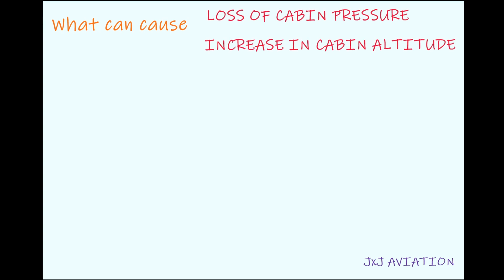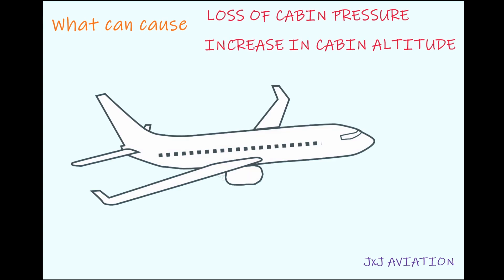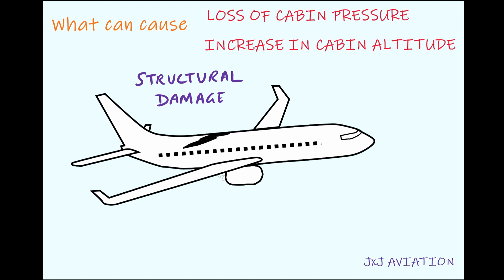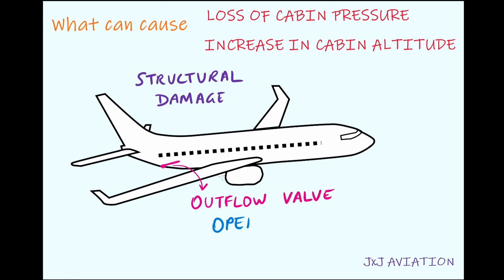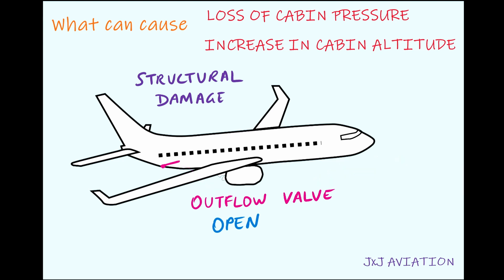Now let's see what can cause a loss of cabin pressure or an increase in the cabin altitude. This could occur because of structural damage to the fuselage, which will cause the air inside the aircraft to leak out, causing an increase in the cabin altitude. Another reason could be if the outflow valve is jammed in the open position. The outflow valve controls the cabin pressure and the cabin altitude. If the outflow valve does not close, the air will escape out of the aircraft resulting in loss of cabin pressure.